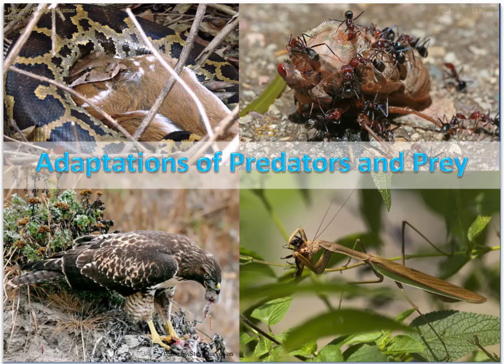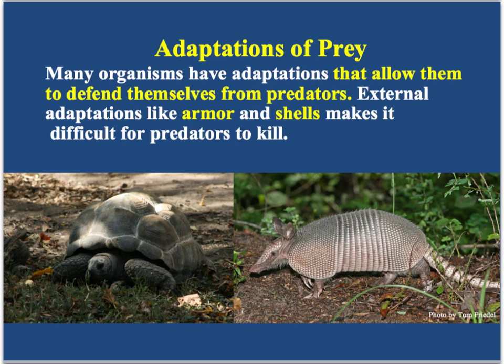Adaptations of Predators and Prey. A predator is going to be something that kills and eats something else for food. The animal or organism that's being killed and eaten is called the prey. A lot of organisms are going to try to defend themselves — they're not just going to lie down and let a lion eat them. They have adaptations that they specifically use or do that allow them to not be as easily killed.